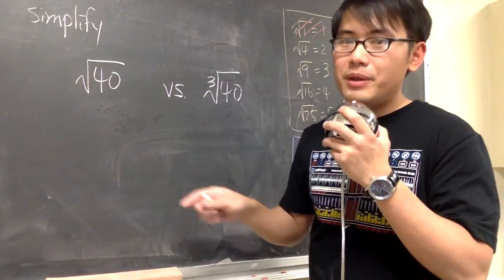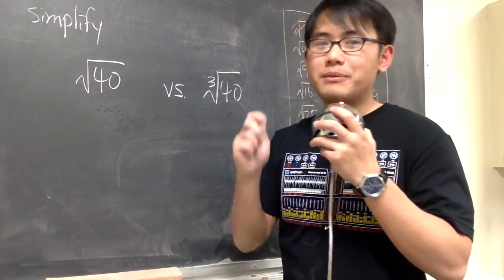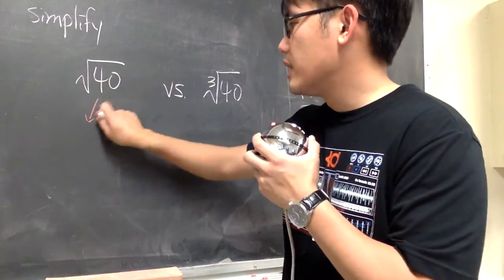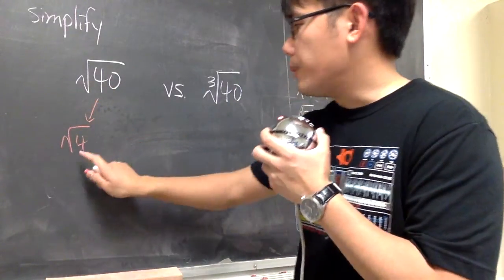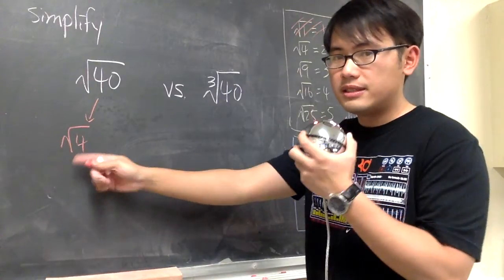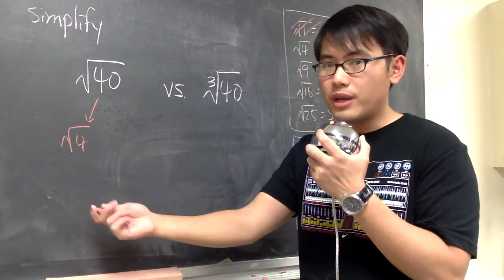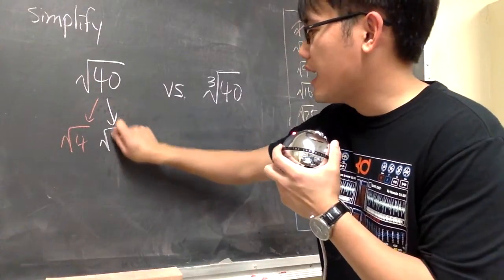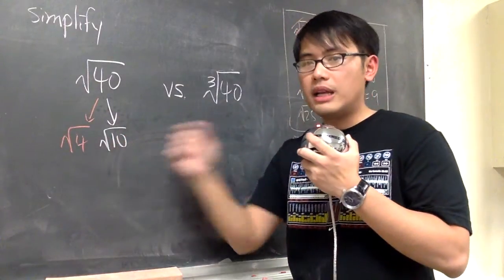To break this apart, let me look at this as 4 times 10. And I will write this down as square root of 4, we put down the perfect square first, because this is going to give us a nice number right away. And then, the square root of 10, the non-perfect square at the end.